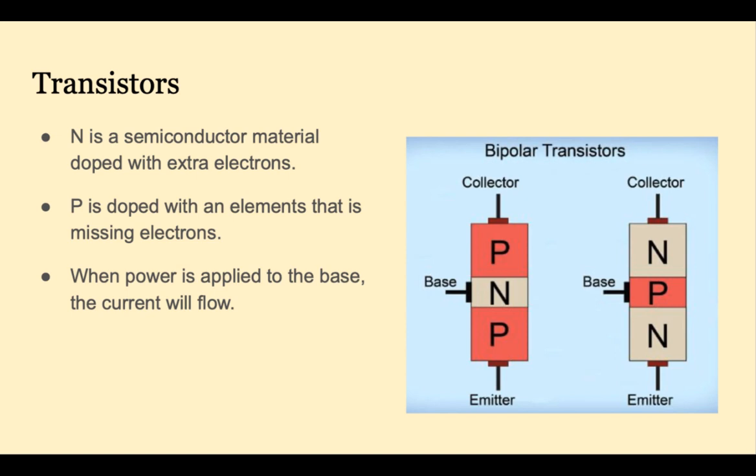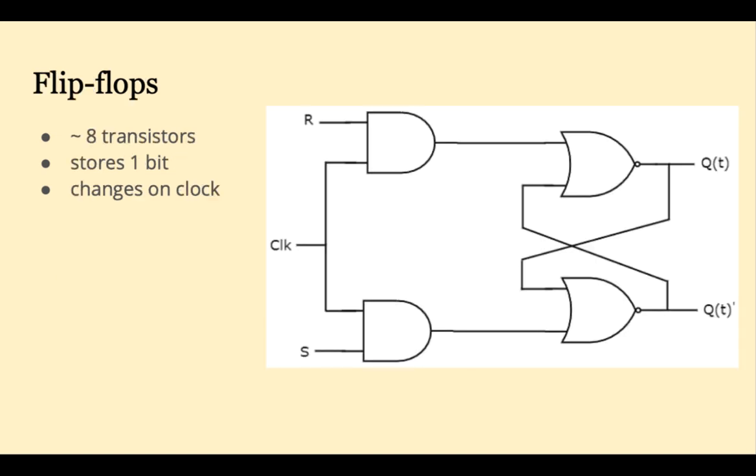Abstractly, we can think of a transistor as just a switch that either lets current go through or blocks it. When we get to Chapter 5, we'll look at different types of memory, like DRAM and SRAM, and see how they're constructed.